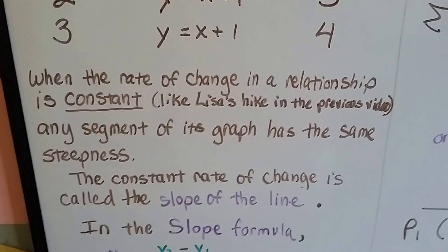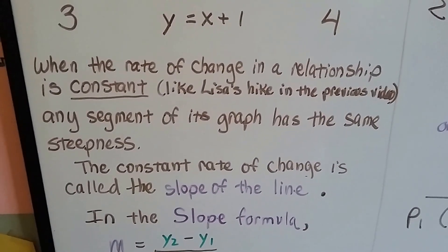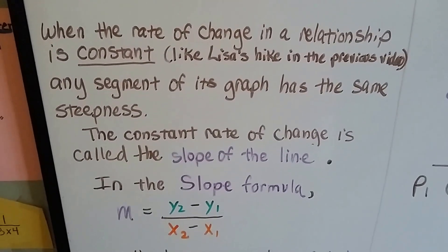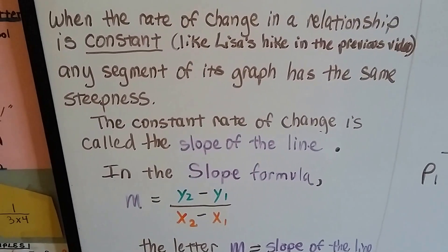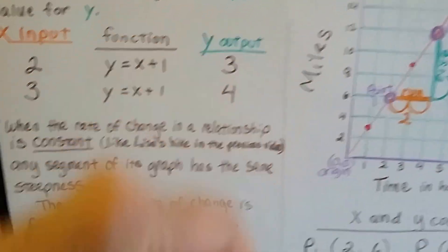When the rate of change in a relationship is constant, like Lisa's hike in the previous video, any segment of the graph has the same steepness. The constant rate of change is called the slope of the line. This is the slope of the line right here. That's the steepness.